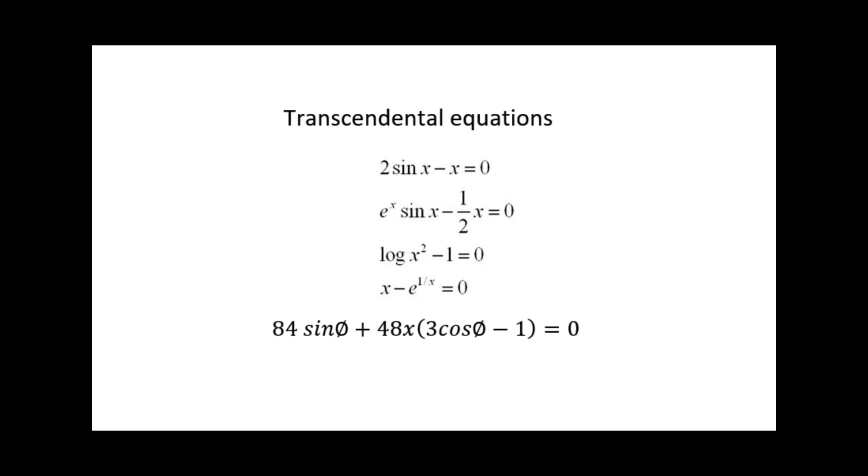Here I am demonstrating this particular equation which is 84 sin θ plus 48 times (3 cos θ minus 1) equal to 0. Here our aim is to find the value of θ which satisfies this equation.